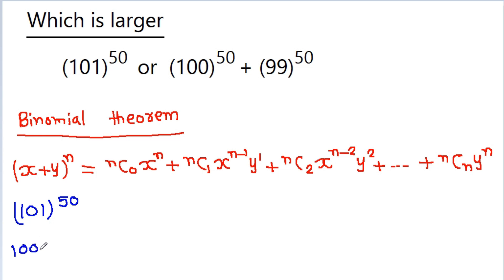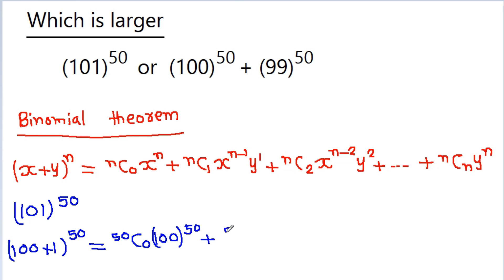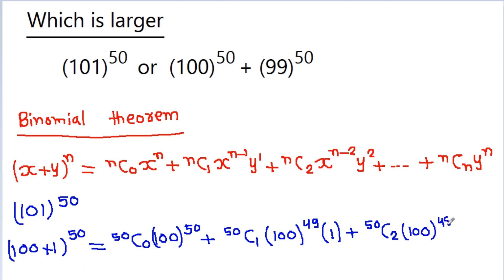If we expand (100 + 1)^50 by the binomial theorem, we get: 50C0 × 100^50 plus 50C1 × 100^49 × 1 plus 50C2 × 100^48 × 1^2, and so on up to 50C50 × 1^50.